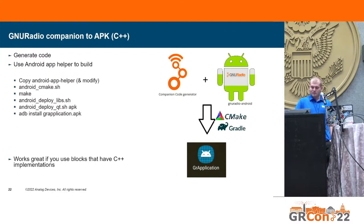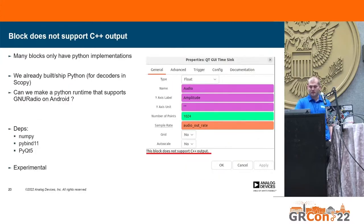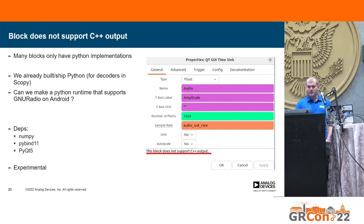The problem here is that not all blocks have C++ implementations — some only have Python implementations. If you try to use a block with only a Python implementation in the C++ code generator, you get an error. This was kind of a blocking point for us. But then we realized we actually ship Python with Scopey because we use Python for the logic analyzer and protocol decoding pieces. So the question became: can we make a Python runtime that supports GNU Radio on Android?